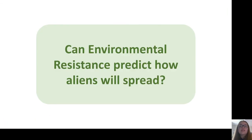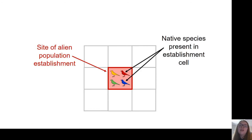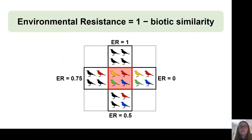Despite Rappaport's environmental resistance model being attractively simple, as far as we know, it hadn't been tested. So we wanted to test whether the environmental resistance model could predict the spread of alien birds. From the Gavia database, we have information on where alien bird populations originally established, so we were able to map these known introduction locations to a grid cell and start our simulations from cells corresponding to the known sites of alien population establishment. Once we have this cell where a population was known to have established, we could look at the native bird species present within this cell, and see what proportion of these focal cell species were also present in other cells — which could then be used to find the environmental resistance to spread.